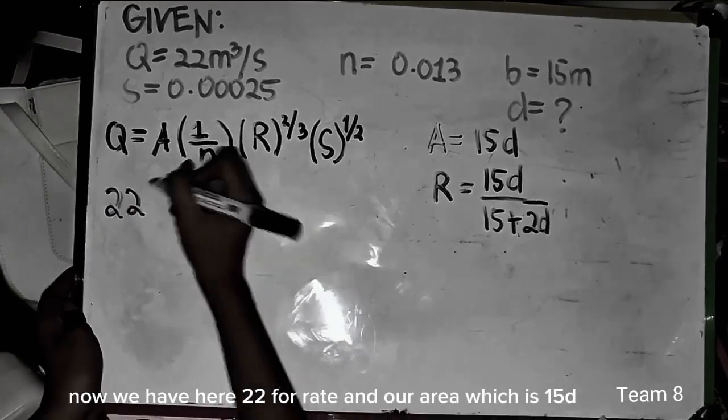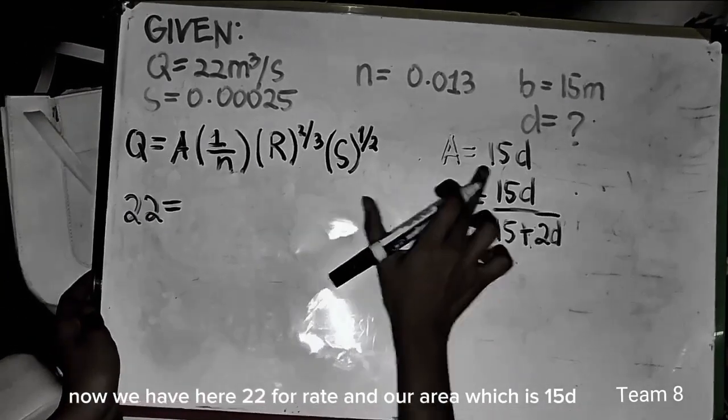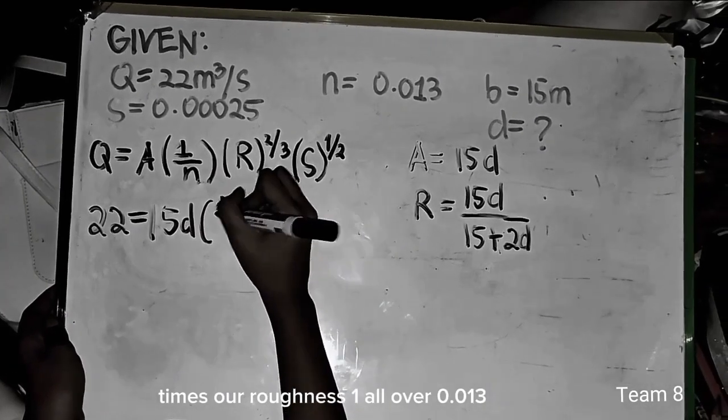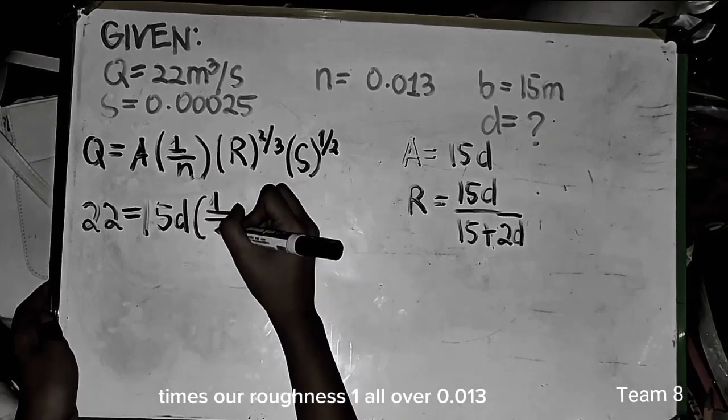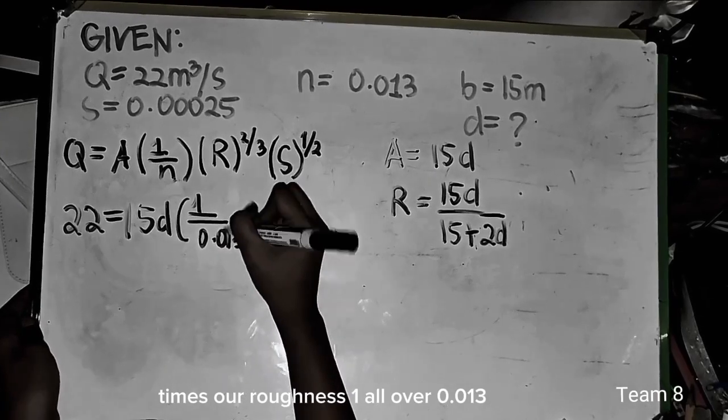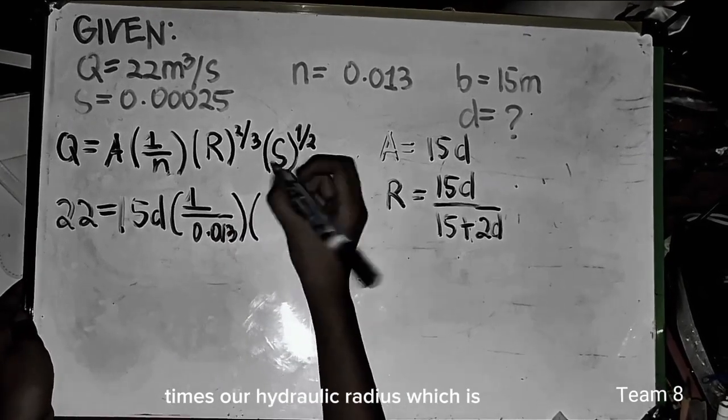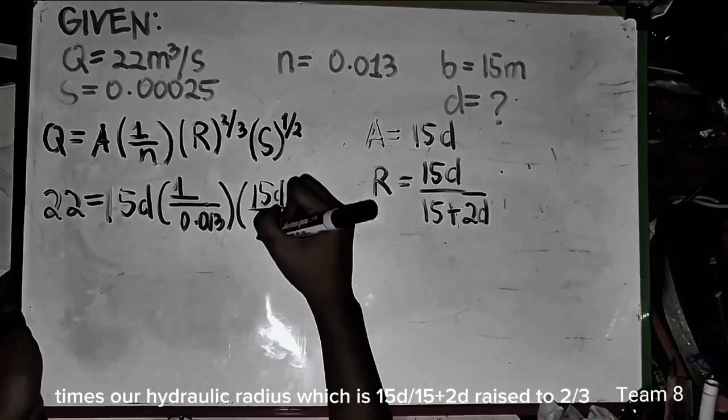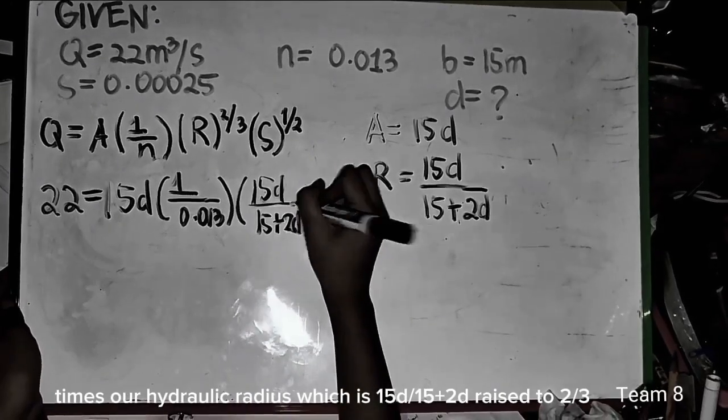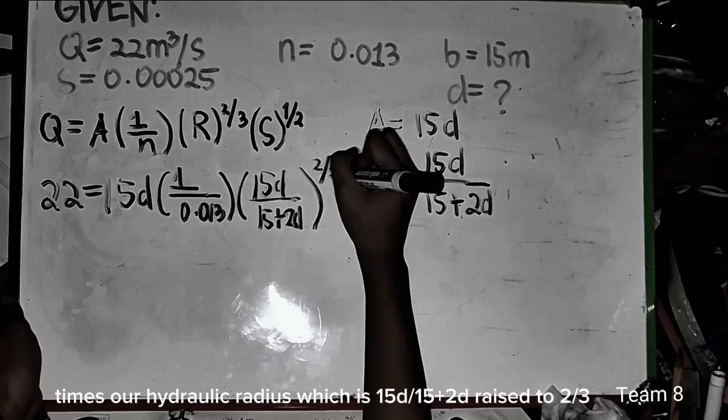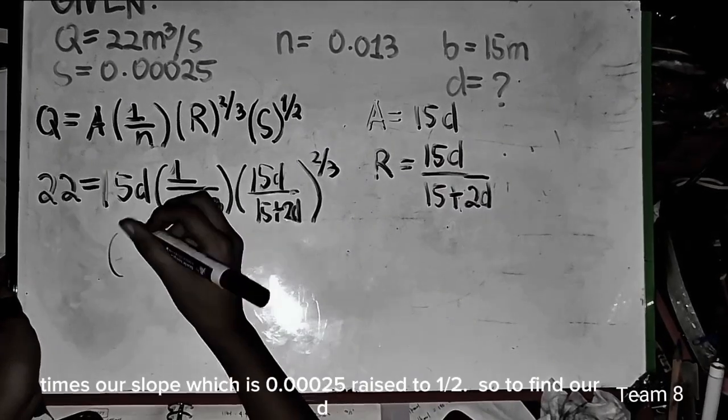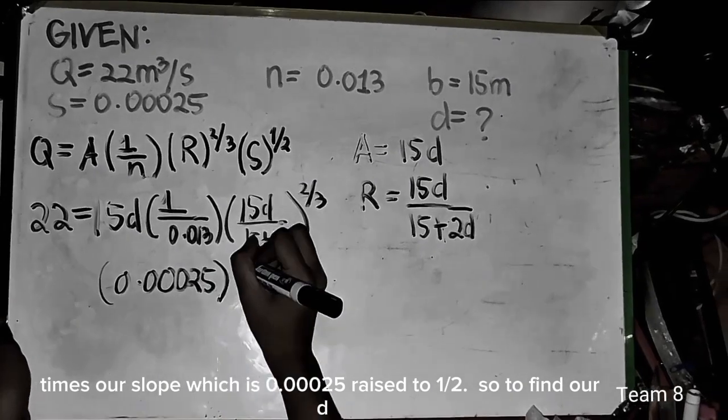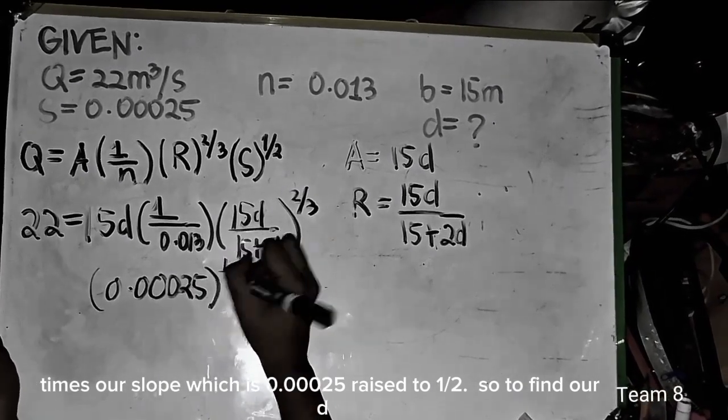So we have 22 for the rate and our area, which is 15D times our roughness 1 all over 0.013 times our hydraulic radius, which is 15D over 15 plus 2D raised to 2/3, times our slope, which is 0.00025 raised to 1/2.